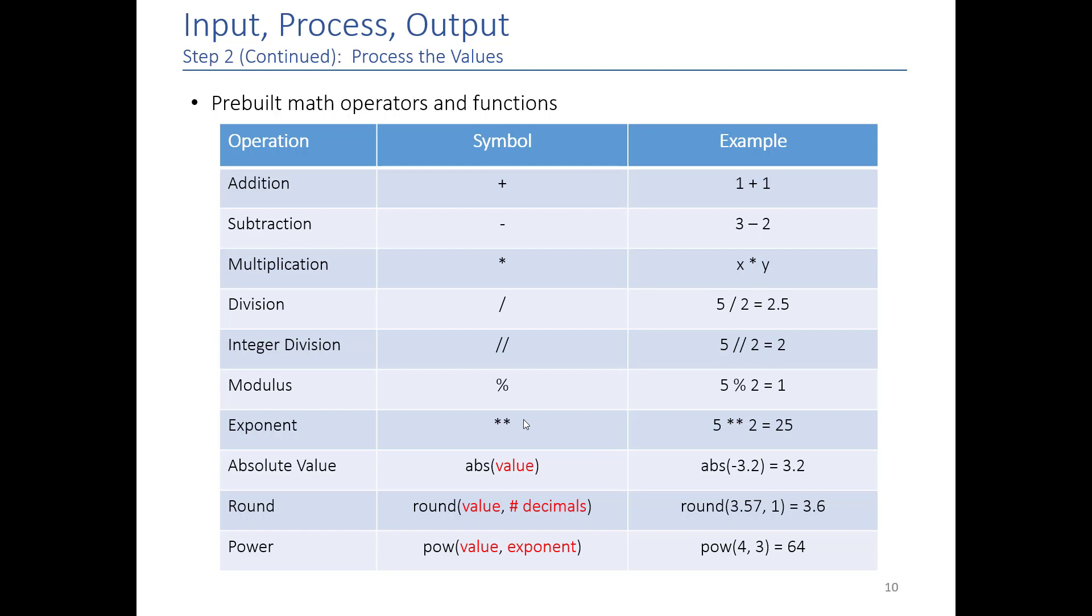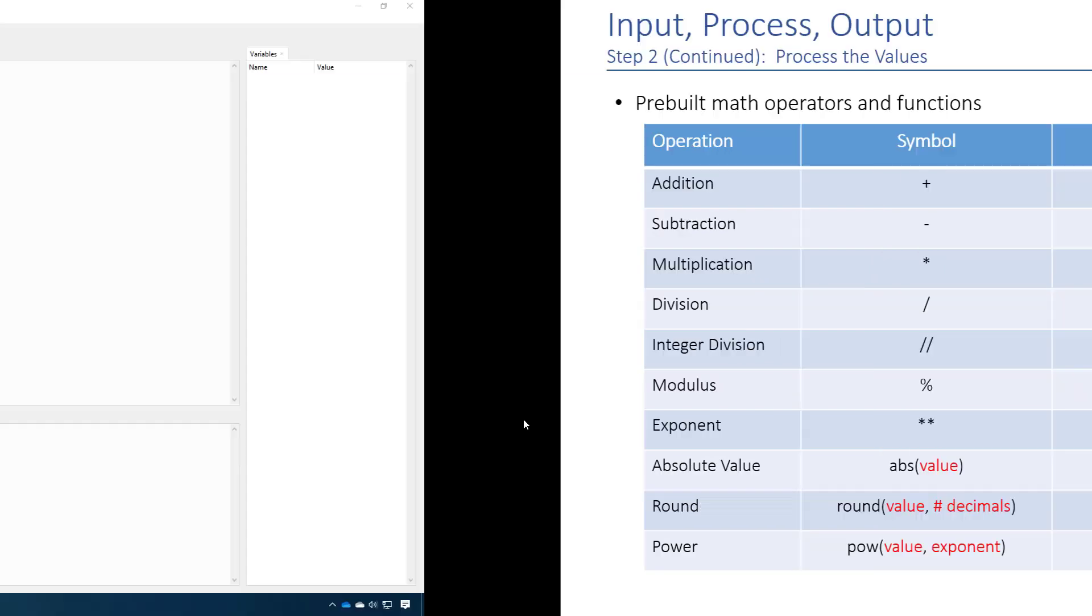So now that we know the pre-built math operators, let's actually go and solve our problem. If we go over here to Thony, you will see that we already have our number_1 and number_2 variables where we got numbers from the user. So now we just need to calculate the average. For the purposes of this example, I'm going to make a new variable. I'm going to call it average because I'm not very imaginative. And I'm going to set it equal to number_1 plus number_2 divided by 2 because that's how you calculate an average.